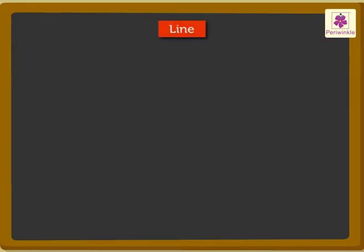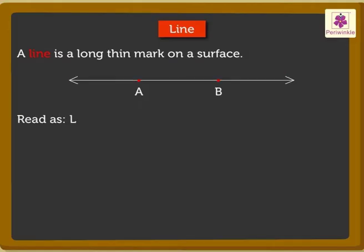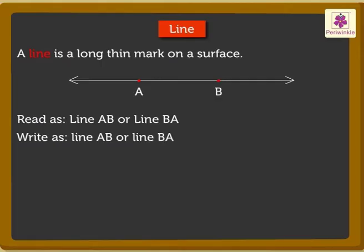Next is line. A line is a long, thin mark on a surface. A line has no endpoints — it extends indefinitely on both sides. Look at this line. We read it as line AB or line BA. We write it as line AB or line BA, or with the symbol of the line above the letters.